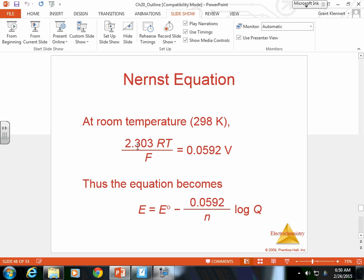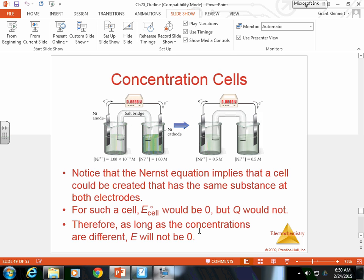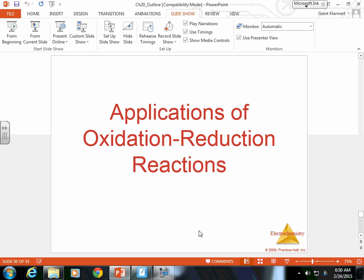Now 2.303 times RT at 298 divided by n is 0.0592 volts, so we can reduce this equation even more. That is the general gist of the Nernst equation. The Nernst equation, you'll dive into it more, but what I want to connect to is the ability to calculate free energy within a redox reaction.